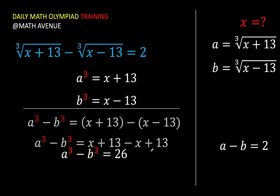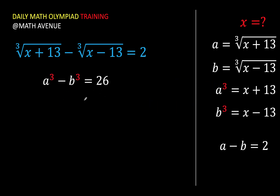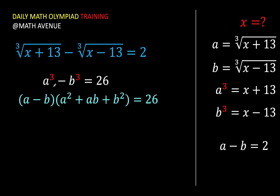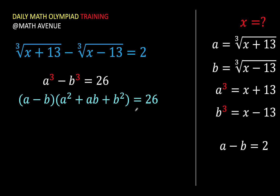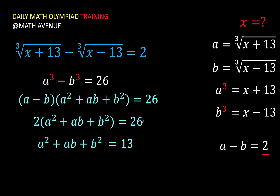Notice that a cubed minus b cubed is a special product — it equals (a minus b)(a squared plus ab plus b squared). So our difference of cubes equals 26. We know a minus b equals 2, so we substitute that and divide both sides by 2, giving us a squared plus ab plus b squared equals 13.